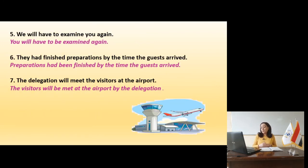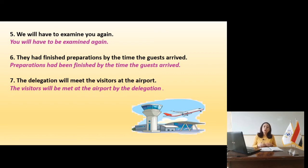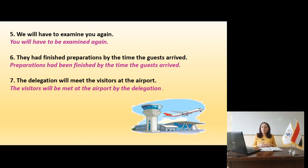Slide 15 — another future example, number 5: 'We will have to examine you again.' This uses future with 'will.' Will, going to, and modals are all followed by the infinitive 'be.' You is the object — begin with 'you,' then 'will have to be,' then the past participle: examined. Result: 'You will have to be examined.'